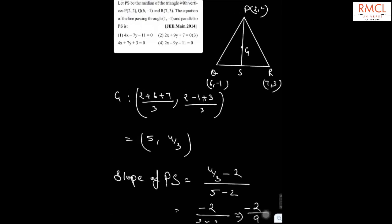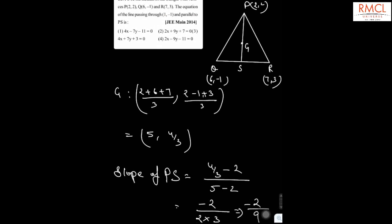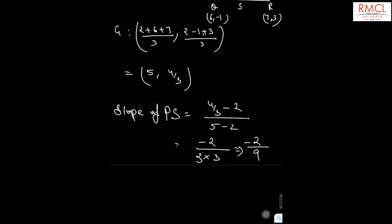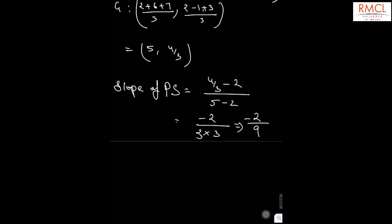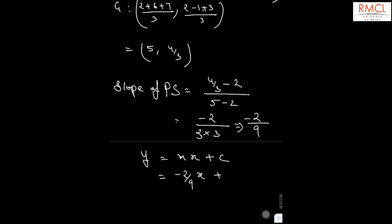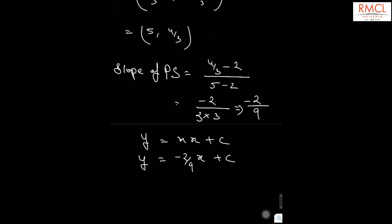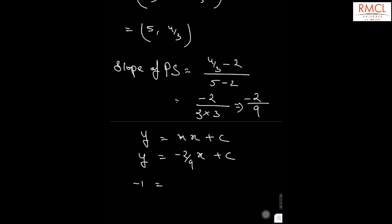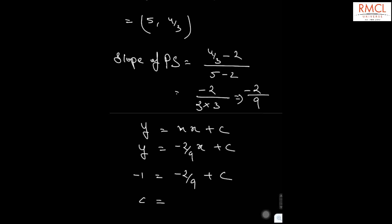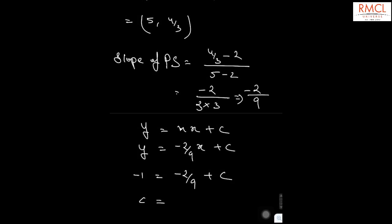Therefore the slope of the required line is also equal to -2/9, and that line passes through (1, -1). We can find the equation easily using y = mx + c, where m = -2/9. Substituting (1, -1), the value of c comes out to be -7/9.